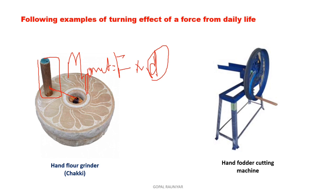The second example is a hand folder cutting machine. The handle is fixed at the edge of the wheel, giving maximum distance between the force and the turning point. This handle at the edge is far from the pivoted point, so it generates maximum moment of force for the minimum effort applied by the person using the cutting machine.